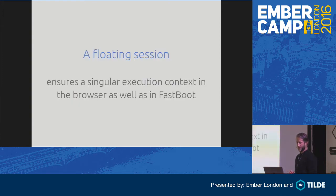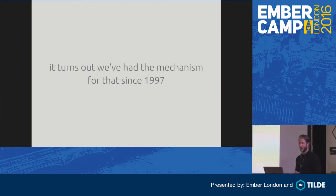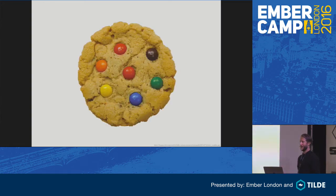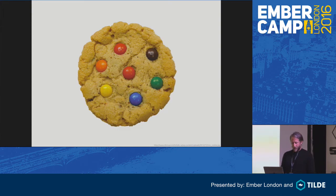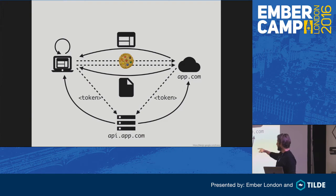What we need is a floating session that ensures a singular execution context in both the browser and in Fastboot, so that the response the Fastboot server pre-renders is the same thing the user would see when rendering in the browser. The good thing is we have the technology for that since 1997 — and that's cookies. As soon as you have a cookie for some domain, it would always be sent with a request to that domain. The idea is to store the token in a cookie that gets sent along with the request to the Fastboot server, so Fastboot can read the token and use it when making requests to the API server.